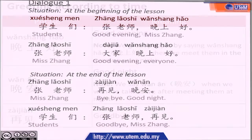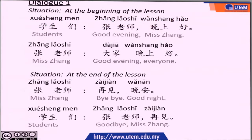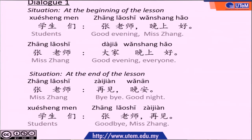Let's see a conversation between a group of students and Miss Zhang. The situation is at the beginning of the lesson. The student will say 张老师,晚上好, which means good evening, Miss Zhang. And Miss Zhang replied 大家晚上好. At the end of the lesson, 张老师 will say 再见,晚安, which means bye-bye, good night. And the students respond 张老师,再见, which means goodbye, Miss Zhang.